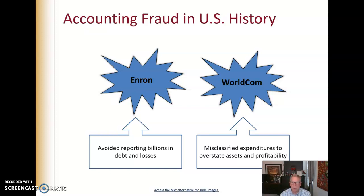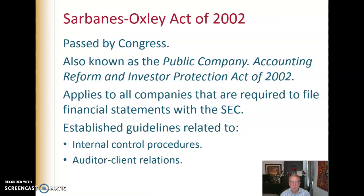Major, major problems. In Enron's case, which is the most publicized, they avoided reporting billions in debt and losses. WorldCom misclassified expenditures to overstate assets and profitability, which of course also meant the stock value was overstated. So in 2002, we passed the Sarbanes-Oxley Act, also known as the Public Company Accounting Reform and Investor Protection Act of 2002 — a long-winded title.